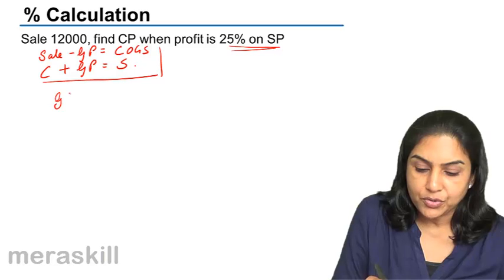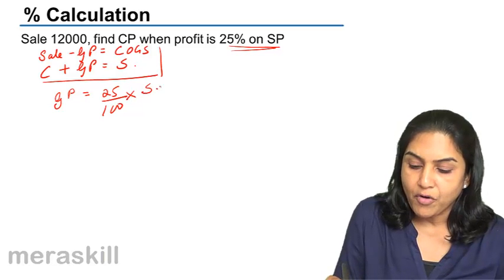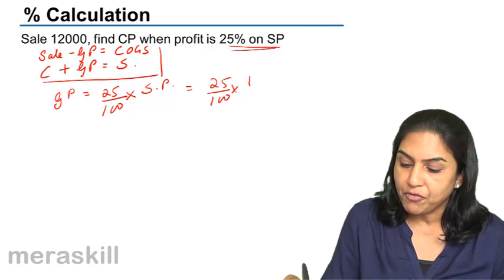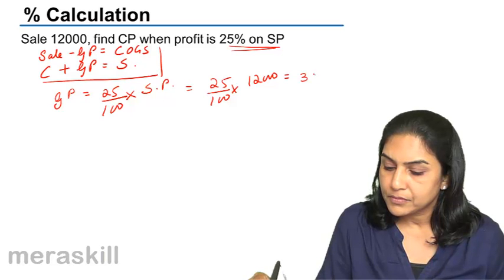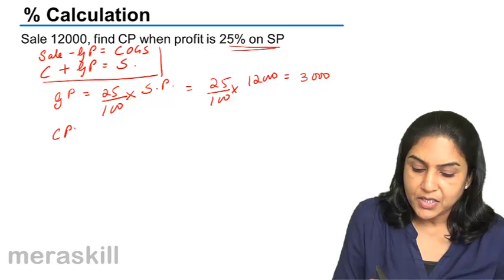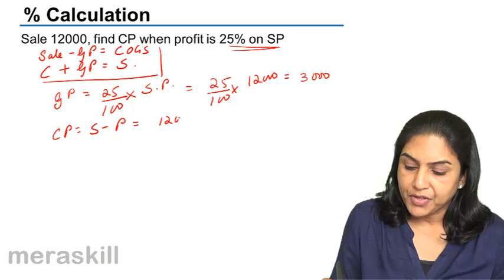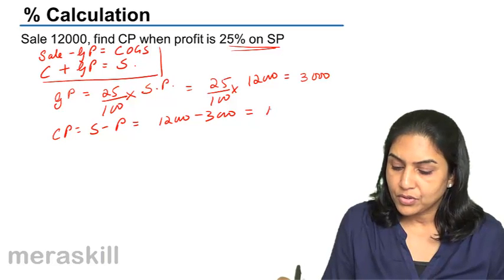Profit equals 25% of selling price, that is 25/100 of 12,000, which gives us 3,000. So what is 3,000? It is the profit. Therefore, cost price equals sale minus profit, which is 12,000 minus 3,000, equal to 9,000 — that is my cost.